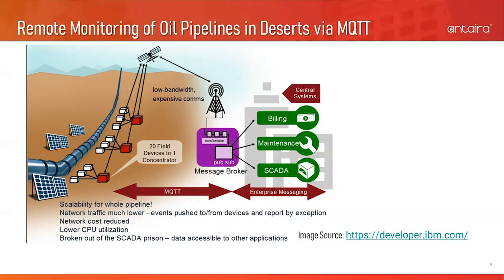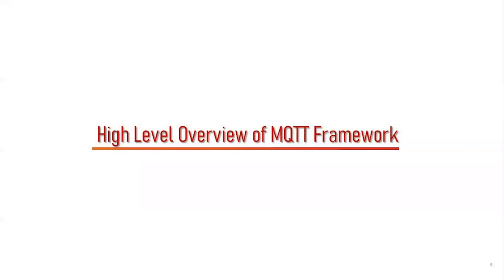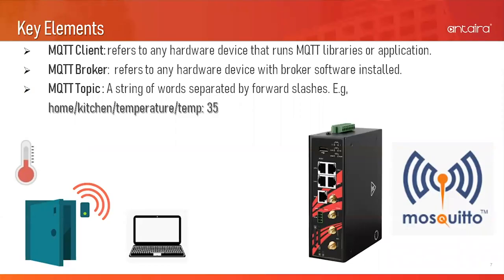When a pressure sensor detected that the pressure in the oil pipeline dropped suddenly, it would notify this event by sending out a message to the message broker. The message broker would then forward this message to the relevant subscriber — that is, the maintenance department — which no longer needed to talk to SCADA in order to find out the pressure status of the pipeline. Let's move on to a higher-level overview of the MQTT framework.